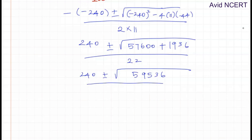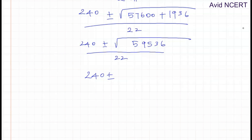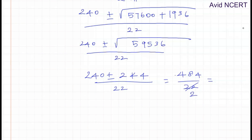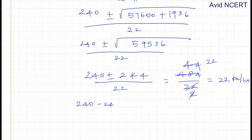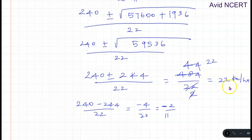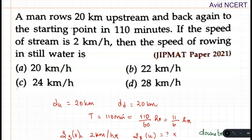So we get: 240 plus or minus the square root of 59536, divided by 22. The square root of 59536 is 244. Taking the positive case: 240 plus 244 equals 484, divided by 22 equals 22 kilometers per hour. Taking the negative case: 240 minus 244 equals minus 4, divided by 22 equals minus 2/11, which cannot be negative. Therefore, the speed of rowing in still water is 22 kilometers per hour. Thanks for watching — if you have any doubts, please let me know in the comments.